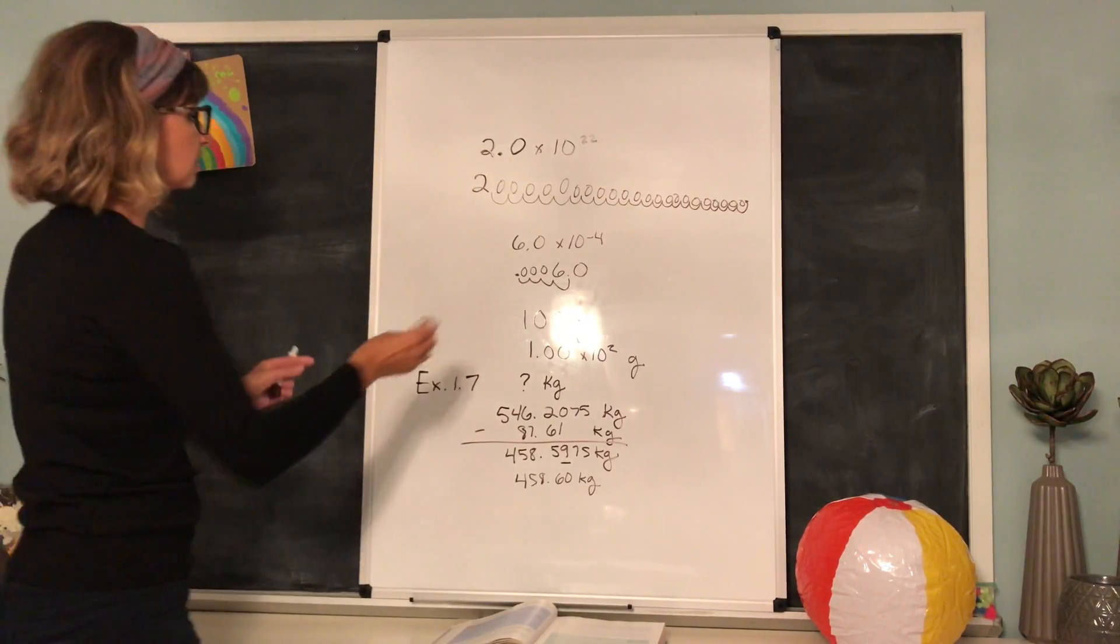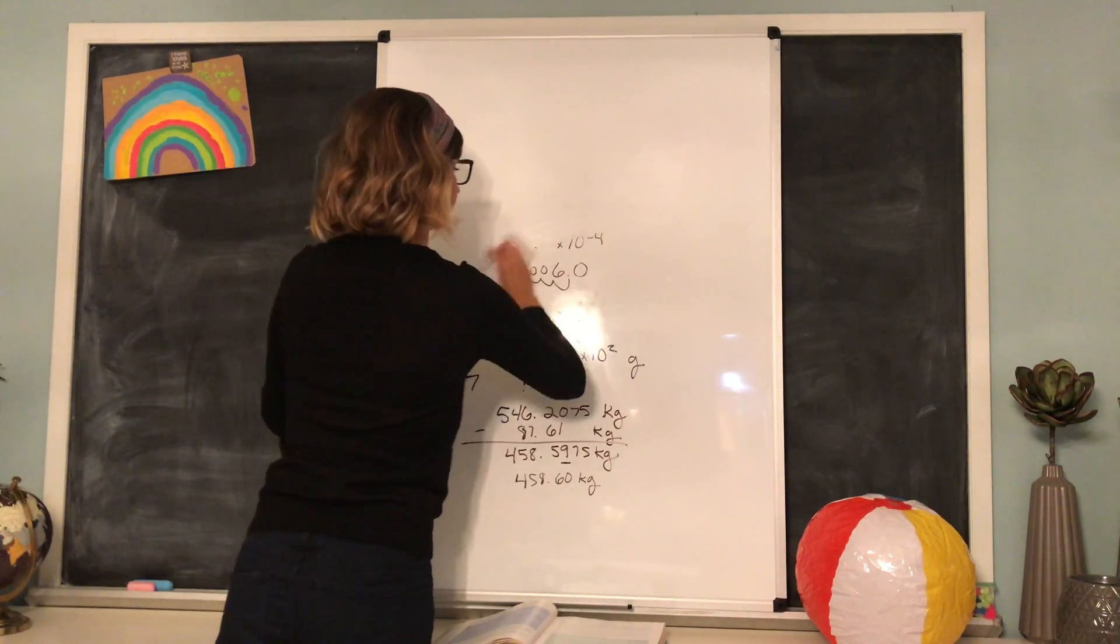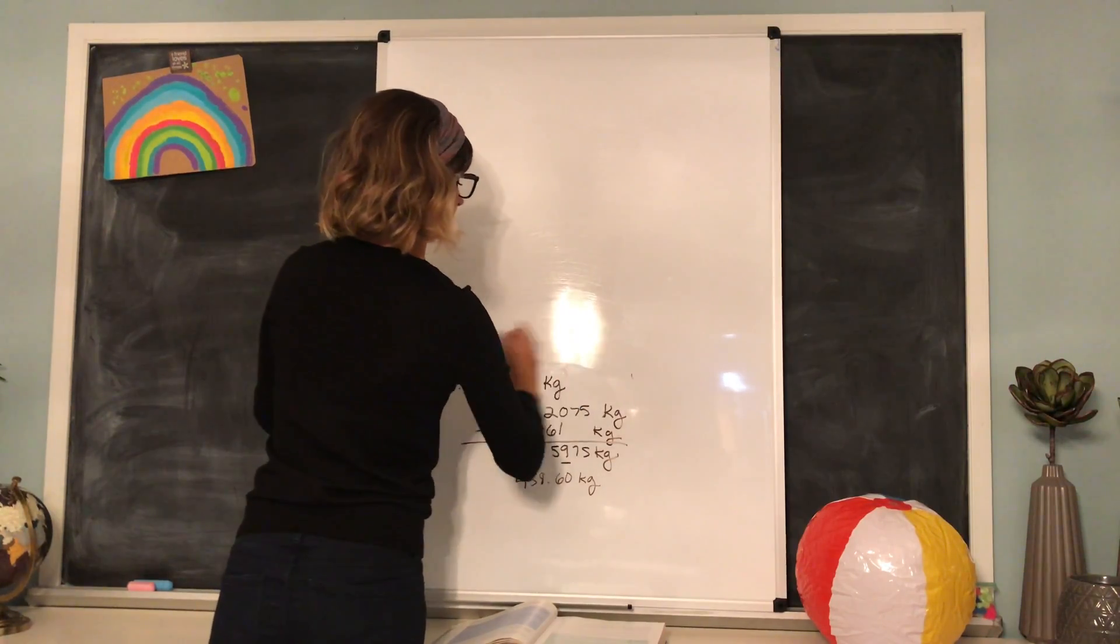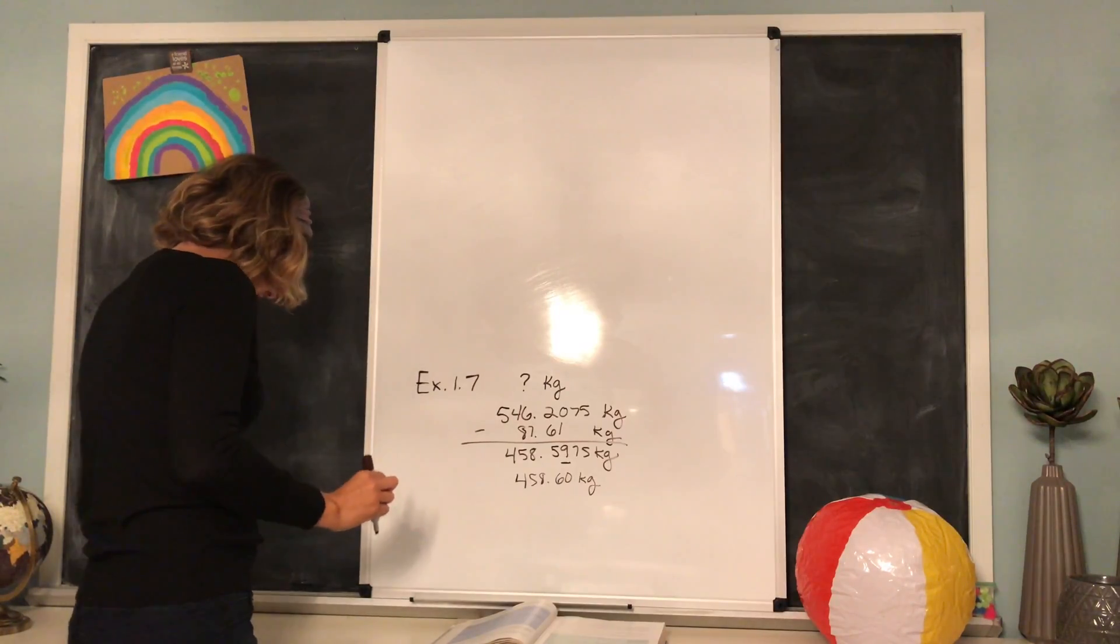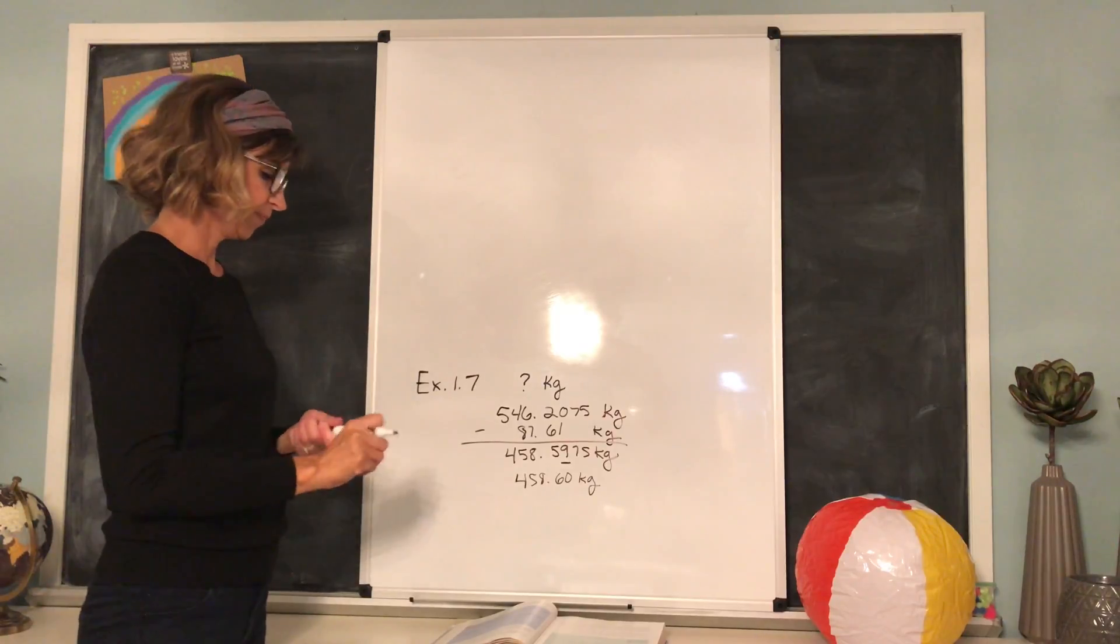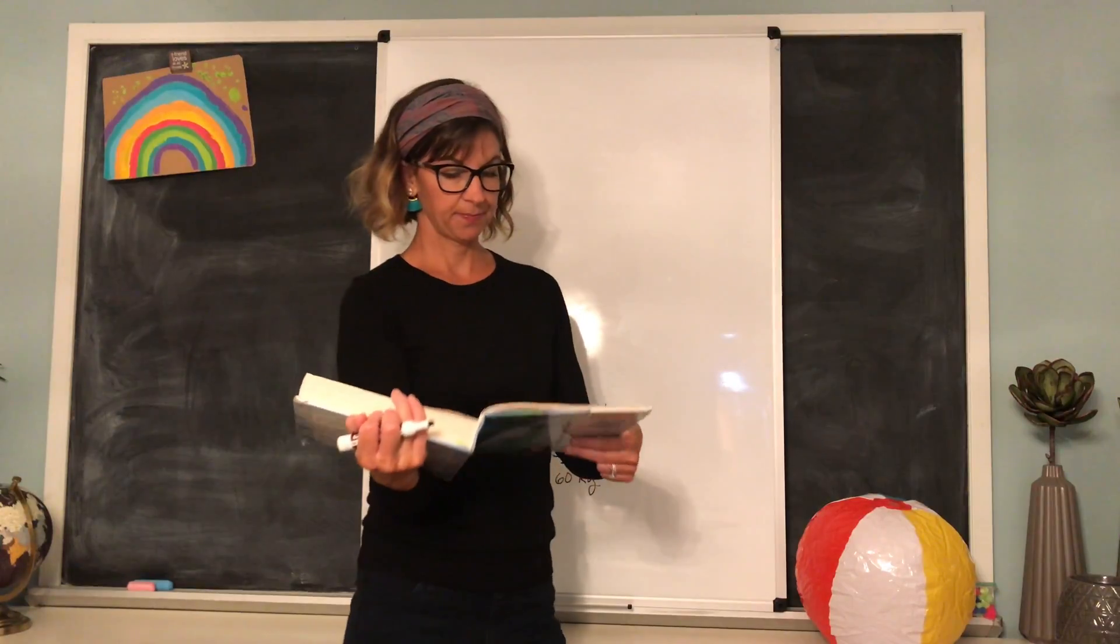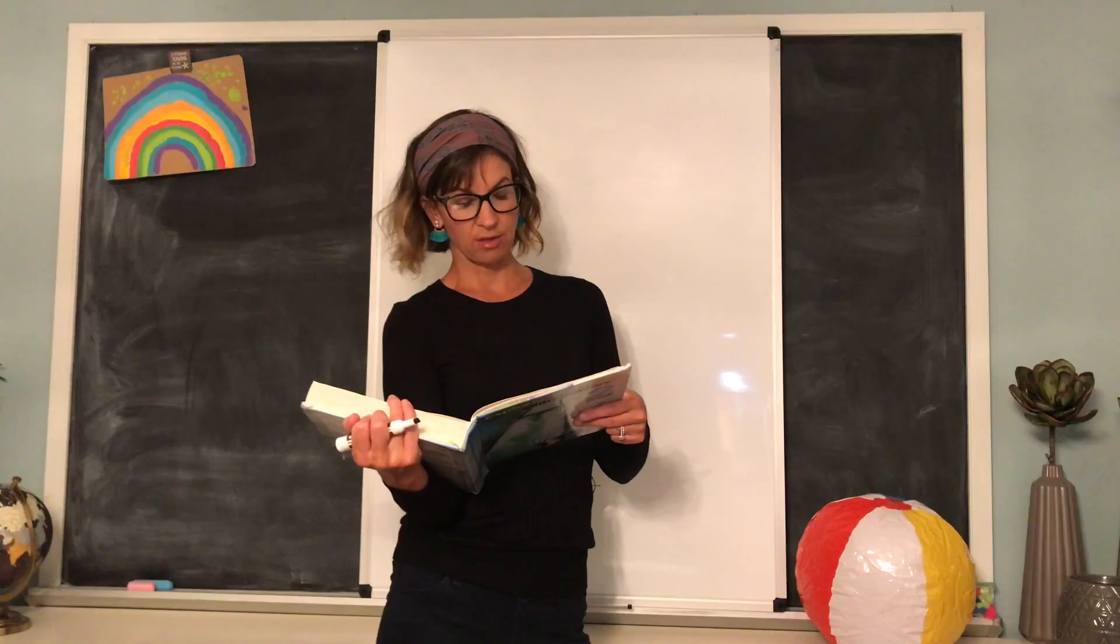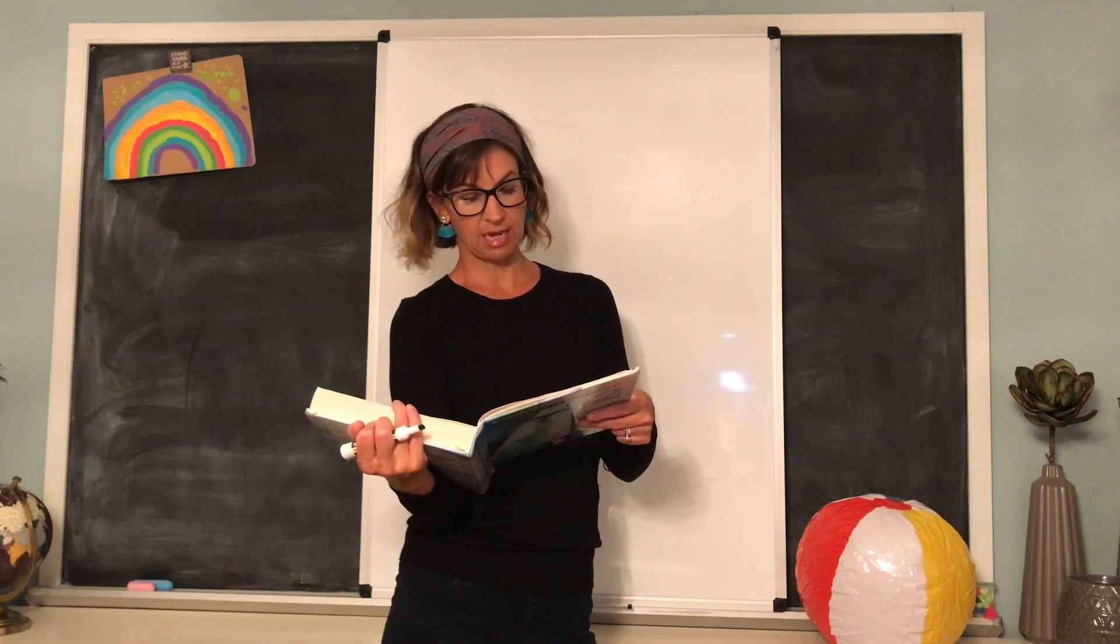So that is an example with adding and subtracting in significant figures. Now we're going to do one with multiplying and dividing because the rule is a little different. Let's read the next example, also part of example 1.7. A person runs 3.012 miles in 0.430 hours. What is the person's average speed?